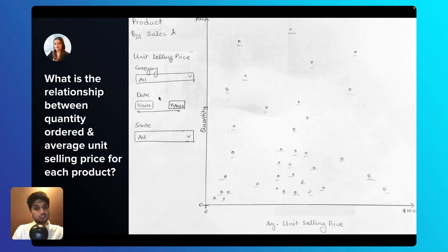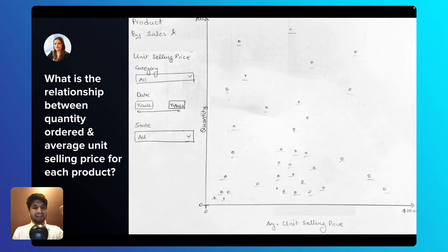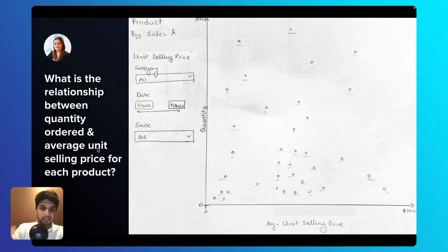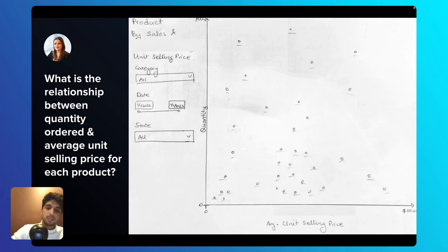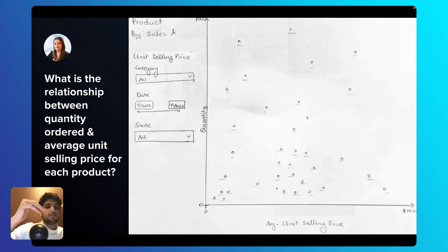For the next question — the relationship between quantity ordered and average unit selling price for each product — you've decided to make a scatter plot. When you want to see the relationship between two numeric measures, a scatter plot is the right choice. You've designed it so you can see whether average unit selling price increases as quantity ordered increases, finding the optimized average unit selling price based on quantity. The scatter plot patterns will reveal unique insights as we analyze the data.